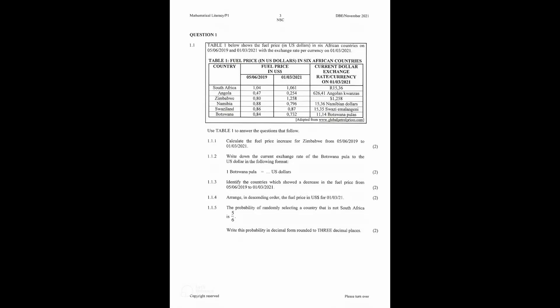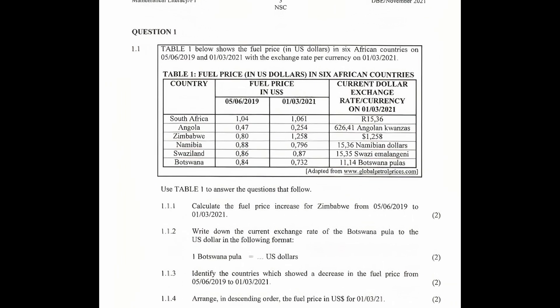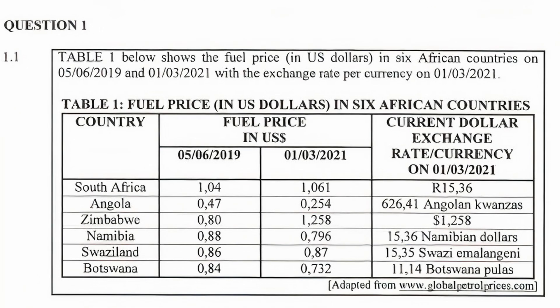In this video I'll be giving you a detailed work through of question 1.1 of Paper 1 Mathematical Literacy November 2021's exam. Question 1.1 states: the table below shows the fuel prices in US dollars in six African countries on the 5th of June 2019 and the 1st of March 2021, with the exchange rate per currency on the 1st of March 2021.